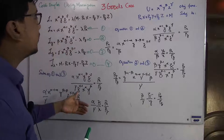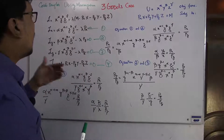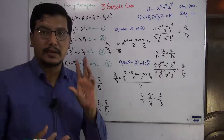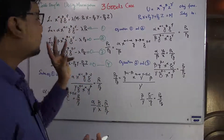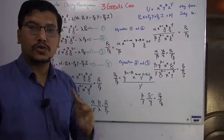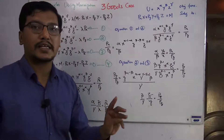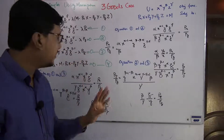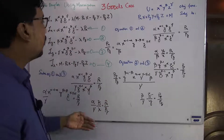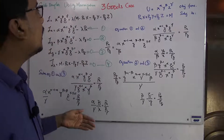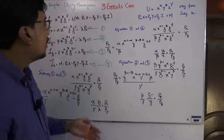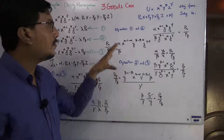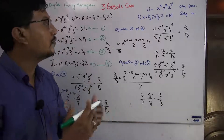We now have four equations. To solve them, recall the mathematical rule: if you have three variables and three equations you can solve for each variable. Here we have four variables — the three commodities x, y, z plus lambda — and four equations, so we can solve for all of them and find the Marshallian demand functions. The solution process is a little complex, so remember these steps carefully to avoid confusion.